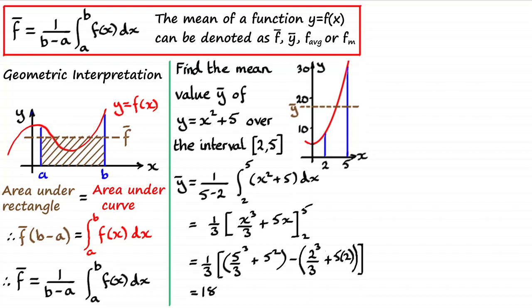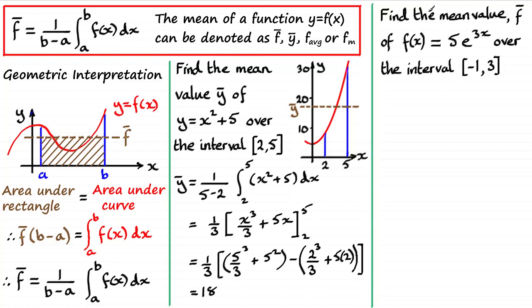So let's give you another one to try. Very short, easy one. Find the mean value—this time I've used f̄—of the function f(x) = 5e^(3x) over this interval [-1, 3]. So again, give yourself a short while just to pause the video so you can have a go.